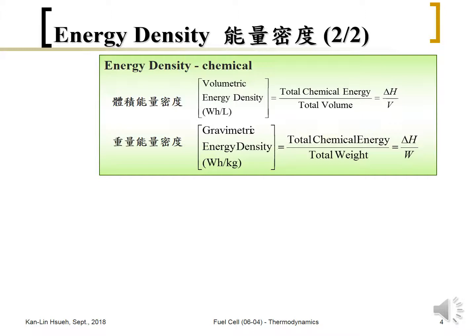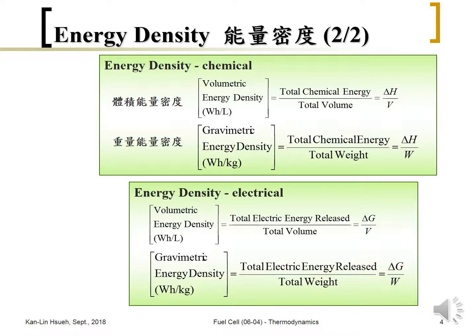For fuel cells it is different from other energy sources like power companies or petroleum companies. When they talk about energy density they are referring to chemical energy — the change of enthalpy, delta H. But in the fuel cell, the energy density we are talking about is the total electric energy. So we use delta G — how much maximum work can be done from the fuel cell — which is delta G rather than delta H. And as mentioned in a previous section, delta G equals delta H minus T times delta S. So you can do the conversion that way.